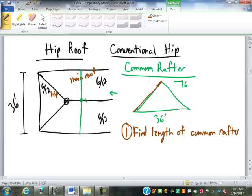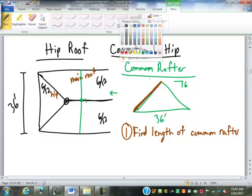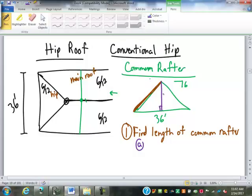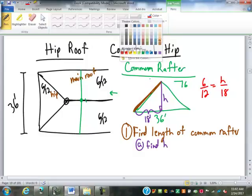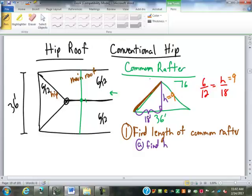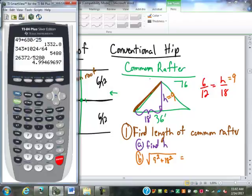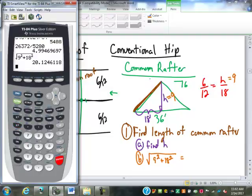That is this piece right here. To find that, of course, what's the first thing we've got to find? The height. So we find height. Of course to find height, we need to know that this is how much? Eighteen, half the span. So we've got six over twelve equals h over eighteen. If we cross multiply and divide, h must be nine. So that means the length of my common rafter is going to be the square root of nine squared plus eighteen squared. We're twenty point one two five.